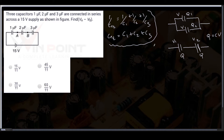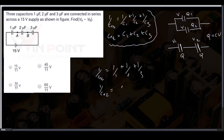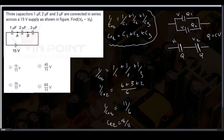You need to know how to simplify the circuit. Here it is in series connection, so the effective capacitance is 1 by C eq equal to 1 by 1 plus 1 by 2 plus 1 by 3. The LCM is 6, so 1 by C equivalent equals 6 plus 3 plus 2, all over 6, which is 11 by 6. Therefore C equivalent equals 6 by 11 microfarad.